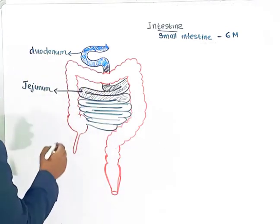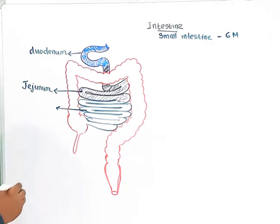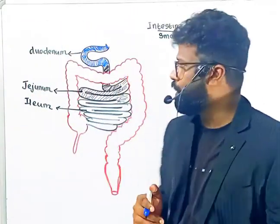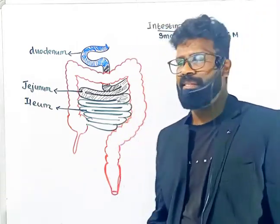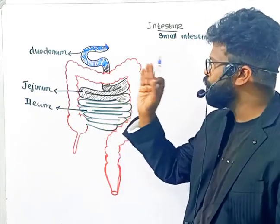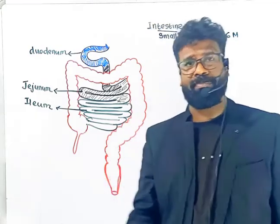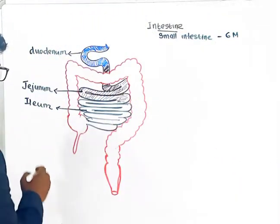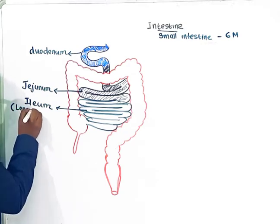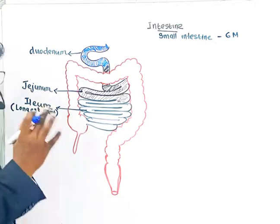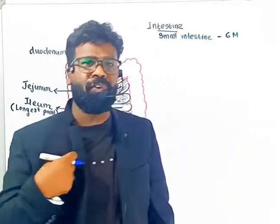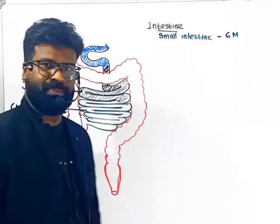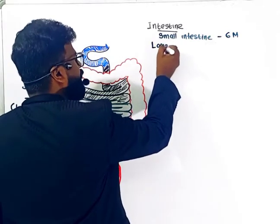The third region is the highly coiled region of the small intestine, called the ileum. The ileum is actually the longest part of the alimentary canal. So the three regions of the small intestine are: the duodenum (C-shaped beginning), the jejunum (middle coiled portion), and the ileum (posterior, highly coiled region).